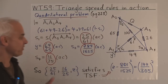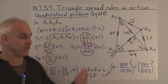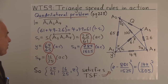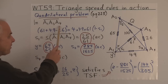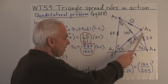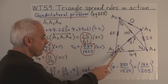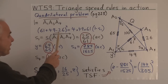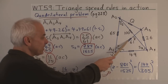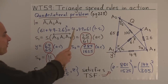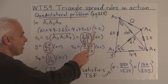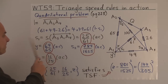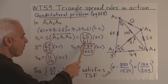So how are we going to proceed? First of all, let's calculate some spreads. Because we know the triangles, we can calculate the spreads pretty easily using the cross law. For example, in triangle A1, A3, A4, we know the three quadrances. Let's find the spread S1. Using the cross law: 61 plus 49 minus 26, all squared, equals 4 times 49 times 61 times 1 minus S1. It's straightforward to calculate S1, and it's 25 over 61.